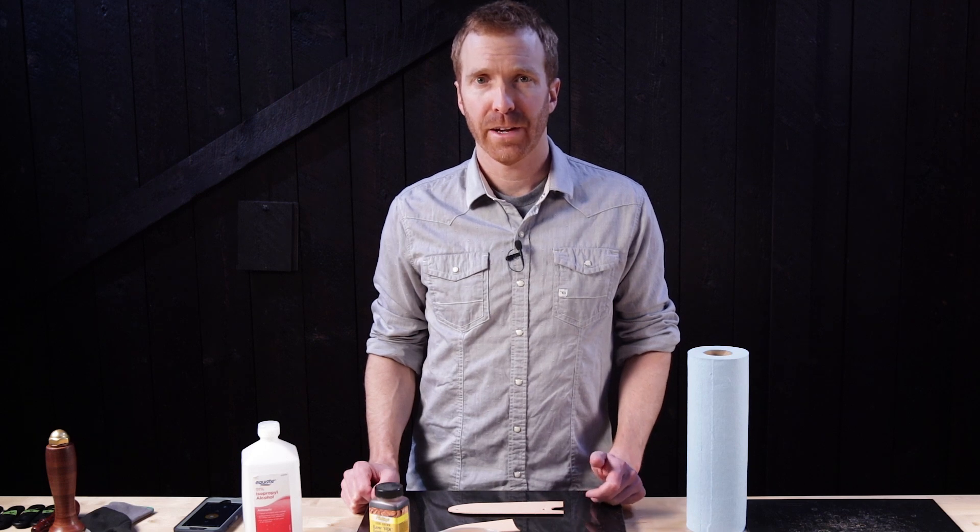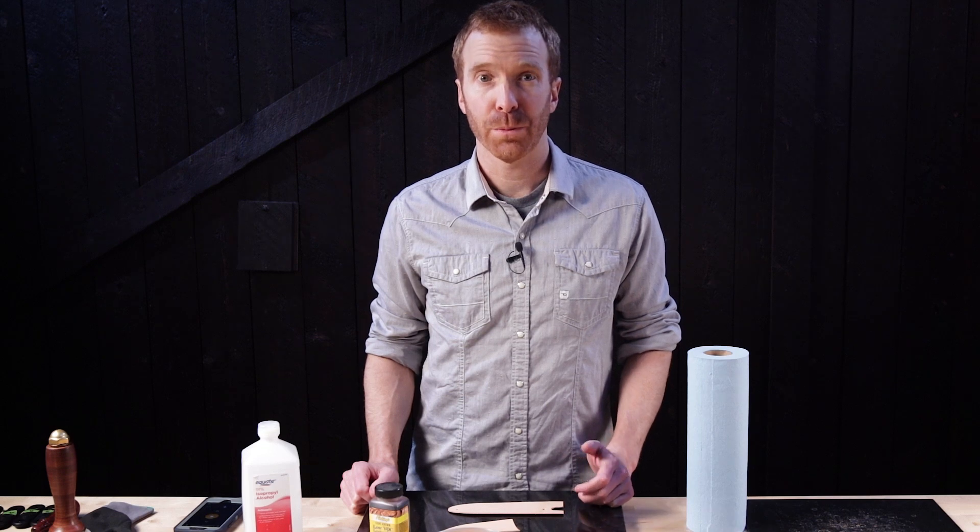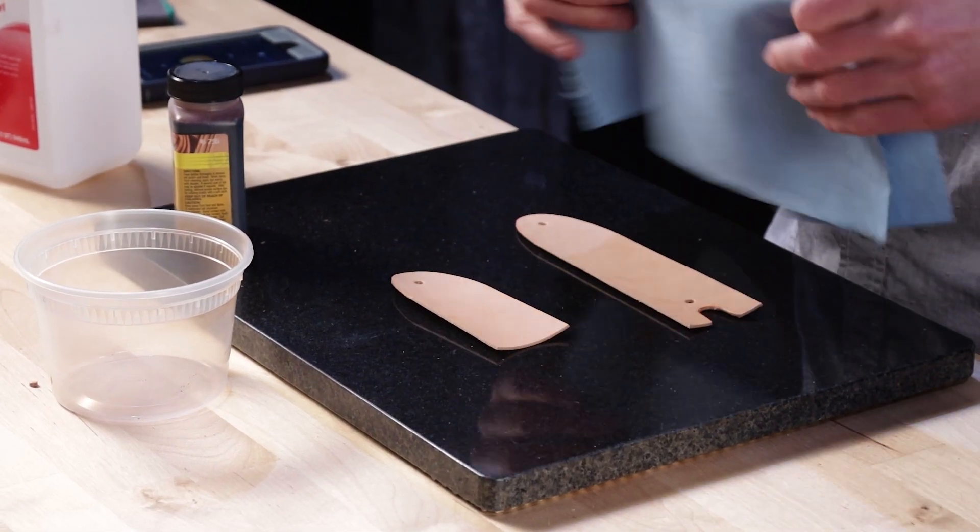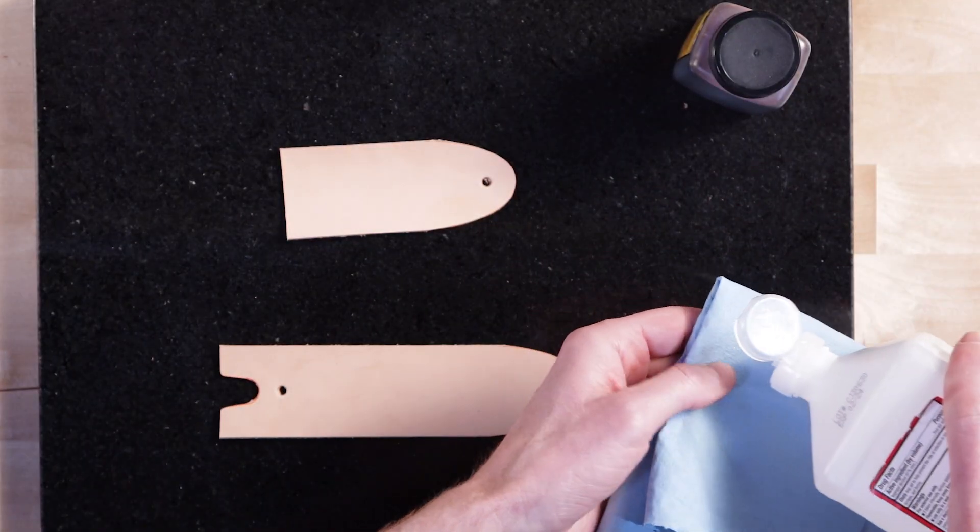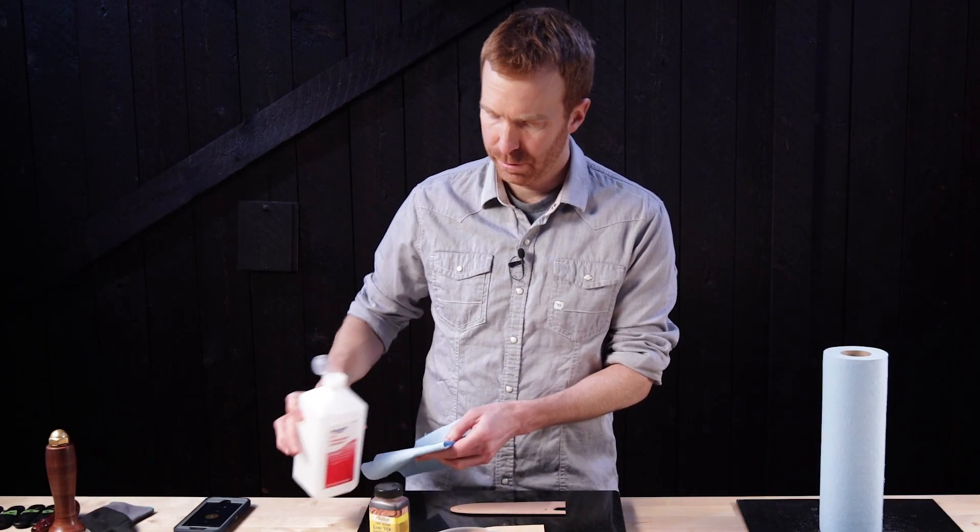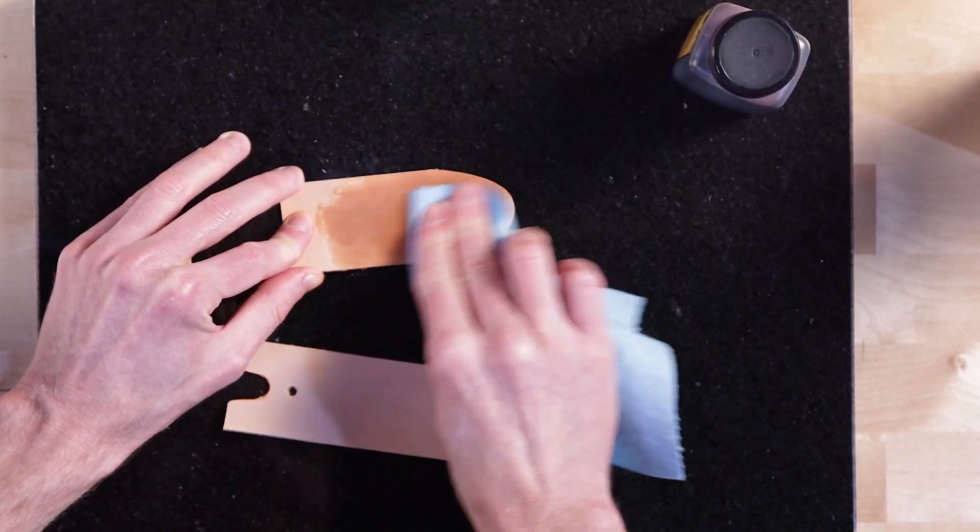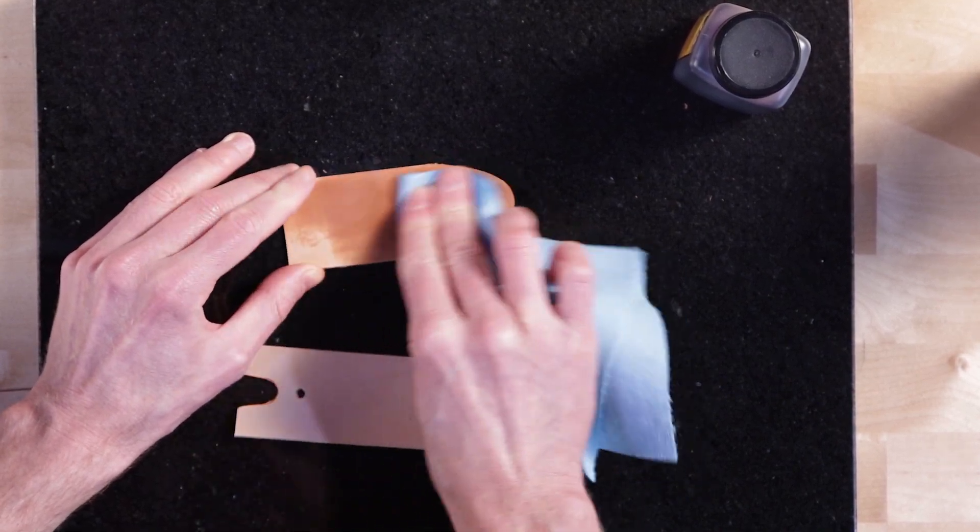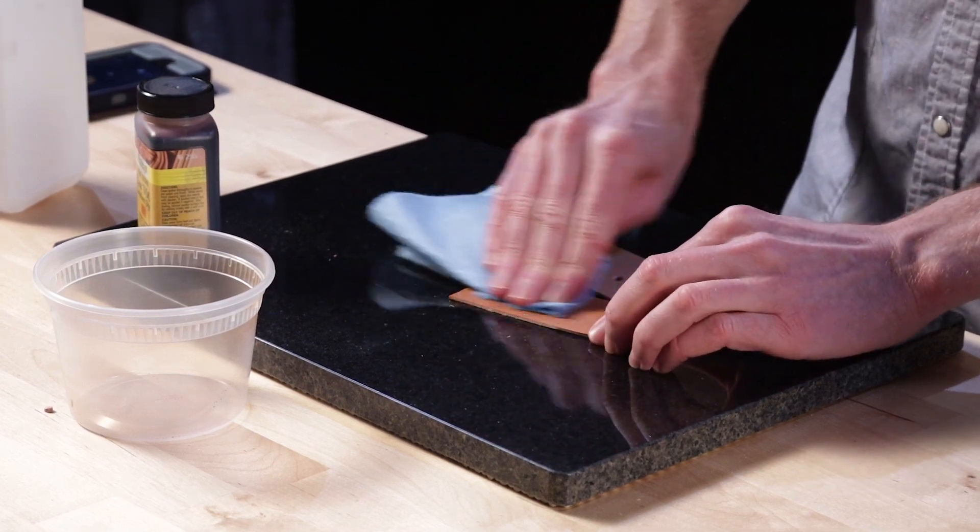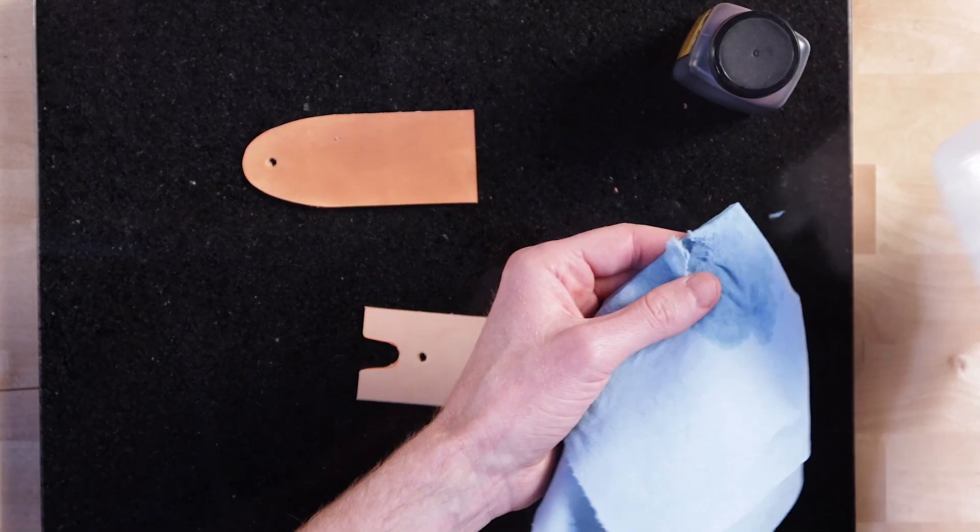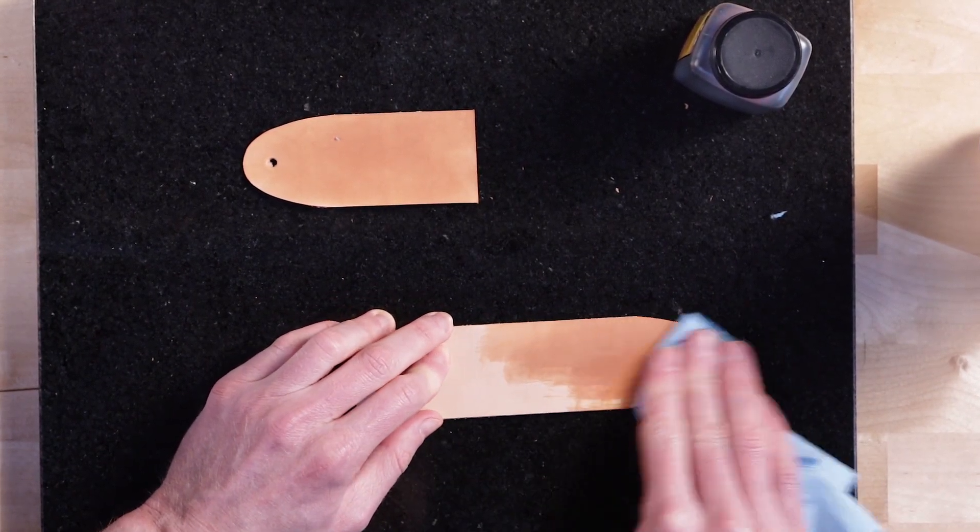All right, next we're going to dye the leather. Hand dyeing vegetable tan leather is notoriously finicky. To help prevent blotchy marks, we will be deglazing the surface. Okay, so to deglaze, I use a high proof alcohol, a 91% alcohol. And I just squirt it right on there. A paper towel. And you're just going to rub the surface like that. This removes any waxes and oils that may have accumulated while the leather was sitting around or while you've been handling it.